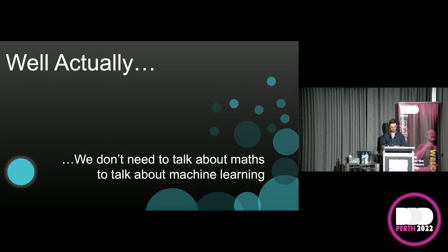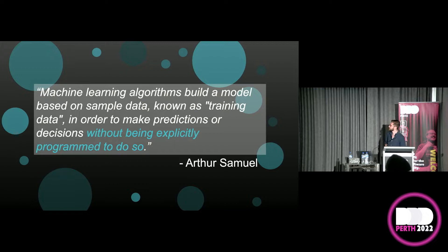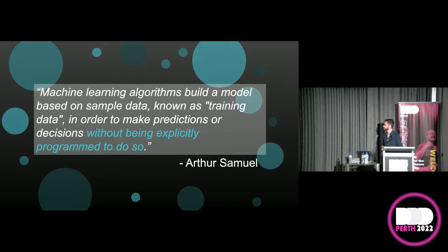So that begs the question: if we're not going to talk about maths, what are we going to talk about? If you looked up the definition of machine learning from Wikipedia, you'd get: 'Machine learning algorithms build a model based on sample data, known as training data, in order to make predictions or decisions without being explicitly programmed to do so.' That bit's important, so keep it in the back of your mind. But this must be some wild new innovation, right? We've got sample data, we're making predictions and decisions.